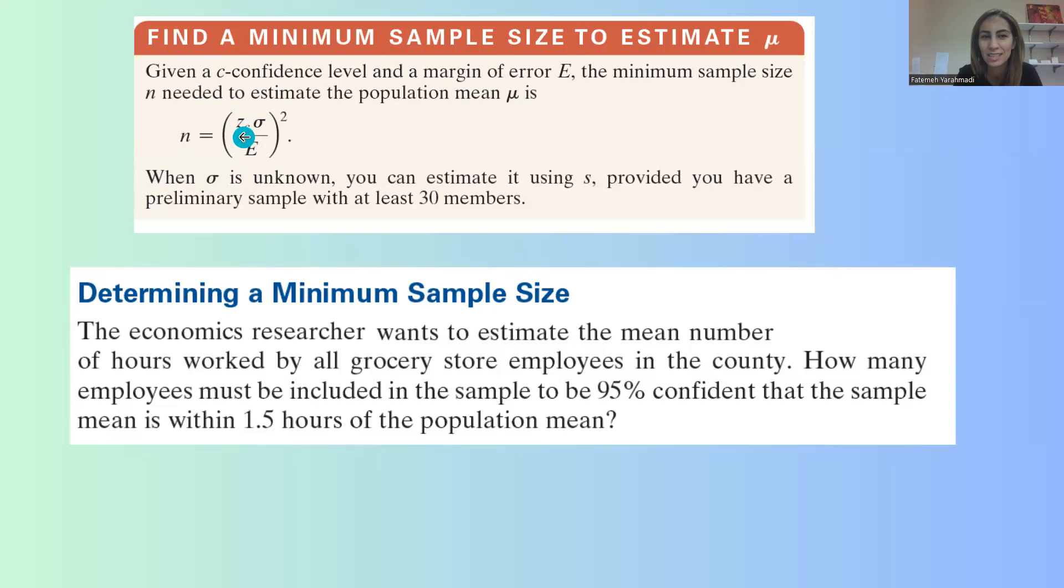What is zc, what is sigma, and what is e? How do we use the information given here and calculate the minimum sample size?